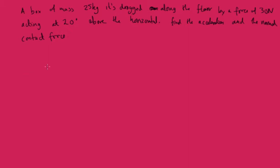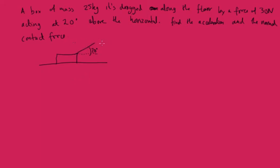We've got a box of mass 25 kilograms. It's dragged along the floor by a force of 30 newtons acting at 20 degrees above the horizontal. Find the acceleration and the normal contact force. Let's draw a picture: the box is on the floor, and there's a little rope being held at 20 degrees to the horizontal. The motion is going to be along the floor — it's moving flatly along the floor, not at 20 degrees.